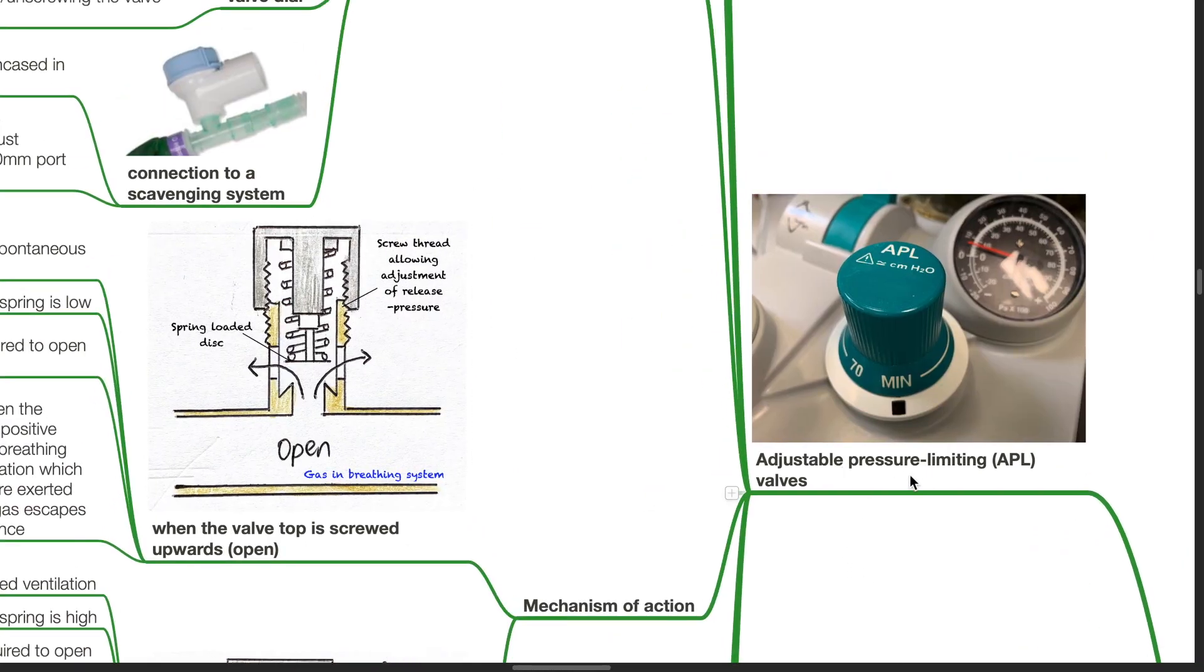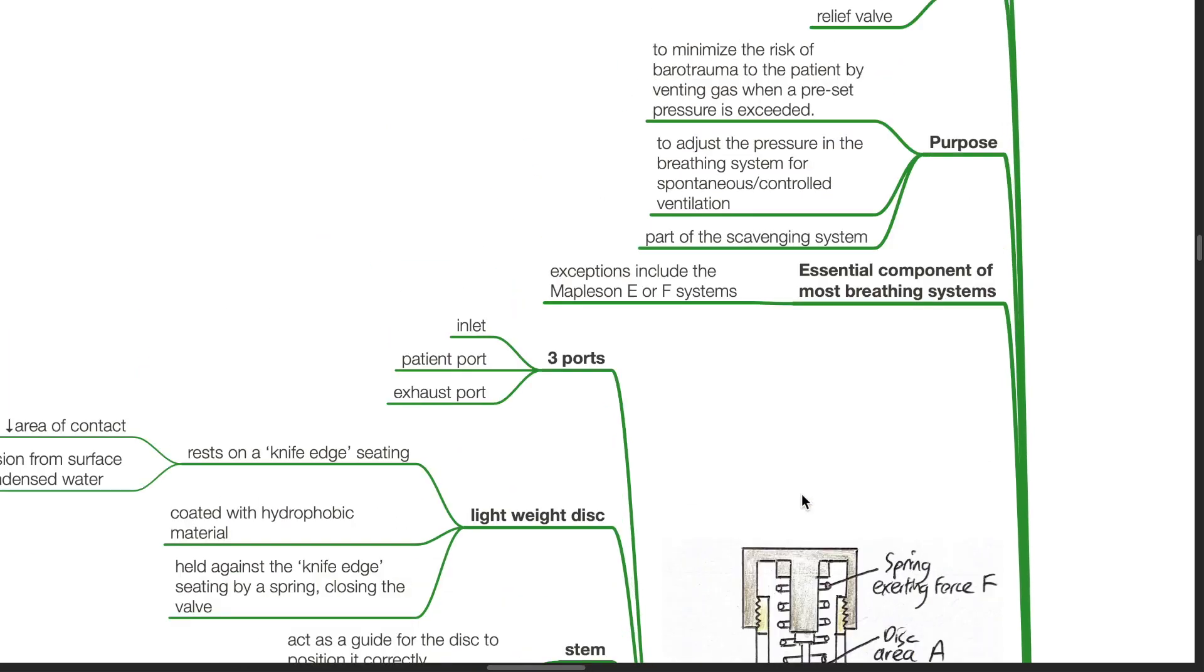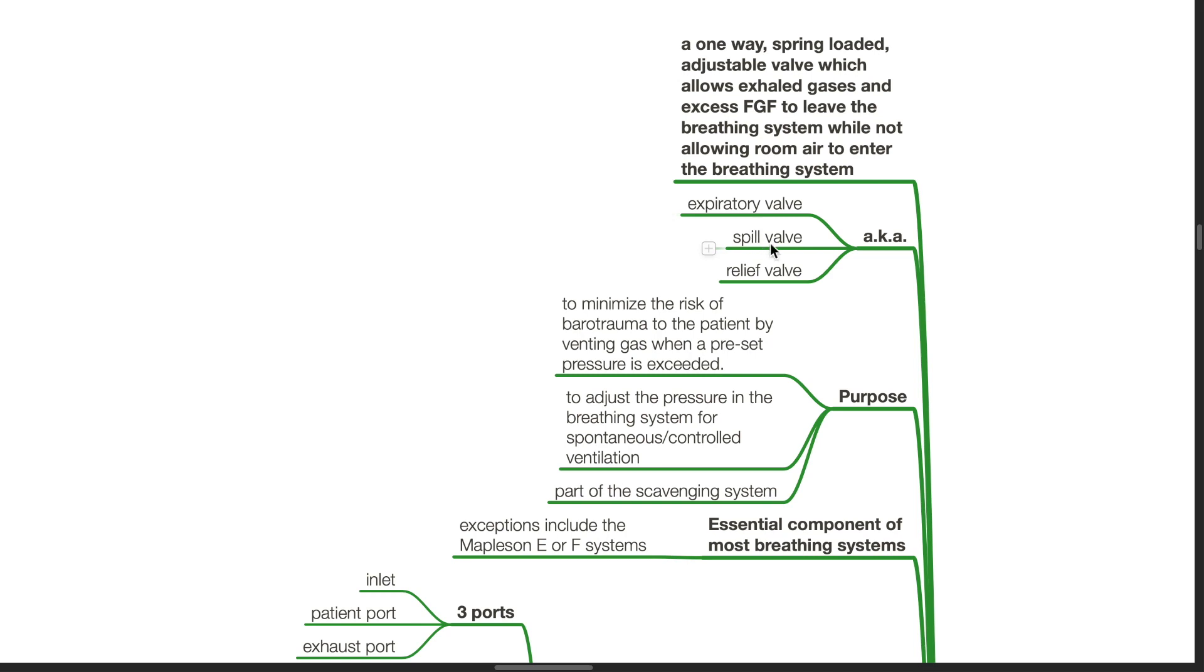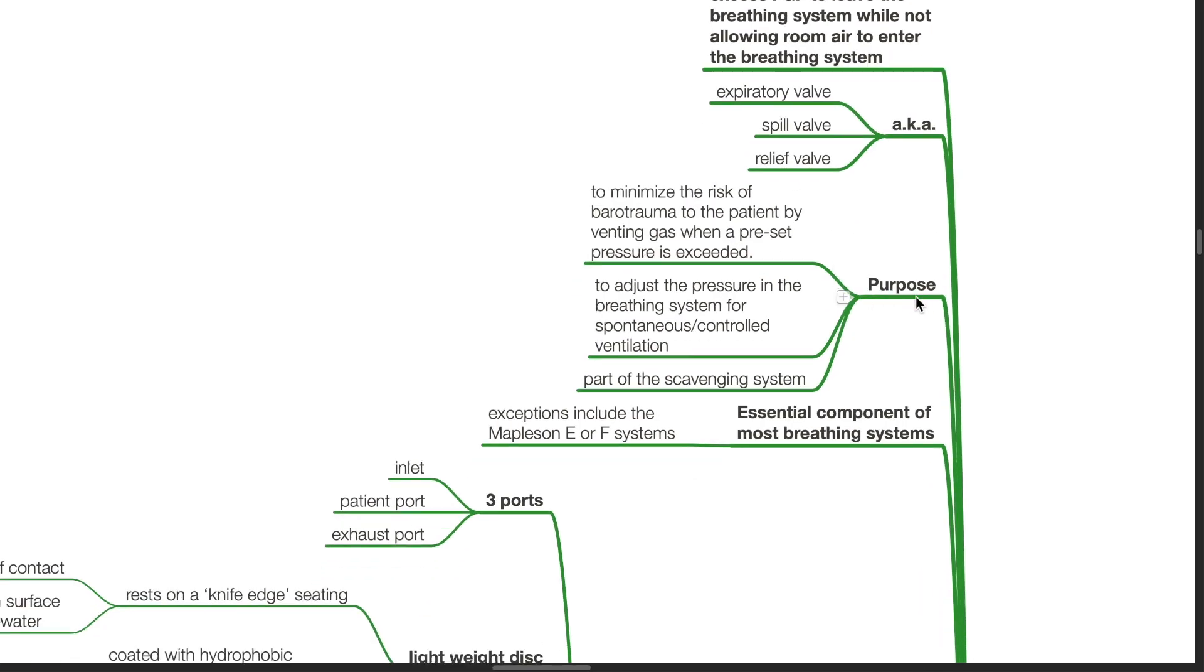Adjustable pressure limiting valves or APL valves. This is a one-way spring-loaded adjustable valve which allows exhaled gases and excess FGF to leave the breathing system while not allowing room air to enter the breathing system. It is also known as the expiratory valve, spill valve or relief valve. Purpose: the APL valve is used to minimize the risk of barotrauma to the patient by venting gas when a pre-set pressure is exceeded. It is used to adjust the pressure in the breathing system for spontaneous or controlled ventilation. And it forms a part of the scavenging system. It is an essential component of most breathing systems. Exceptions include the Mapleson E or F systems.